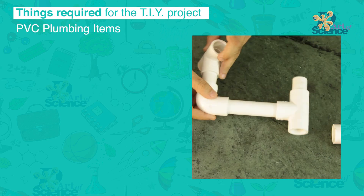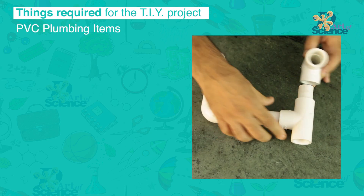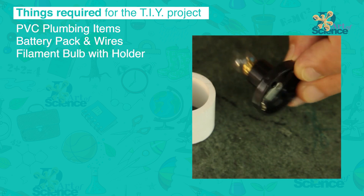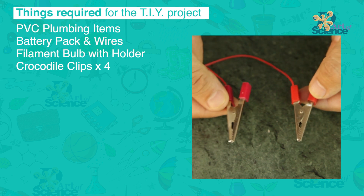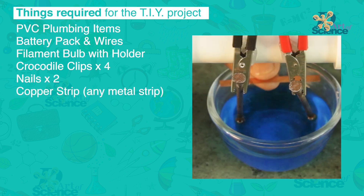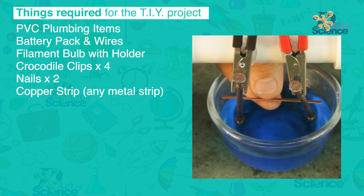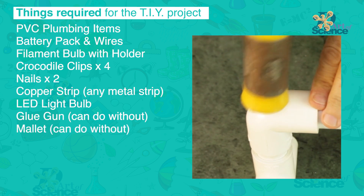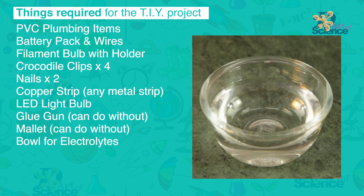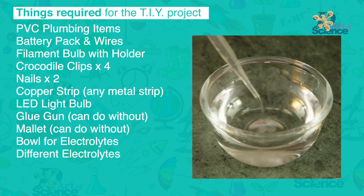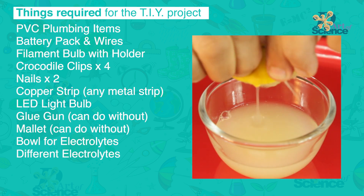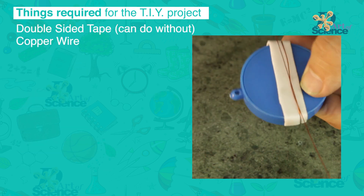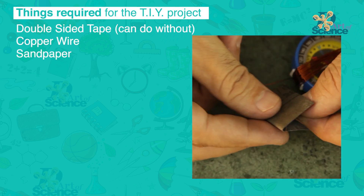Things required for the DIY project: PVC plumbing items with dimensions given earlier, 4 pencil batteries and connectors, filament bulb with holder, crocodile clips, iron nails, metal strips, LED light bulb, glue gun (you can even do without the glue gun), a mallet, bowl for different solutions, different liquid solutions as mentioned, magnetic compass, double-sided tape, copper wire, and sandpaper.